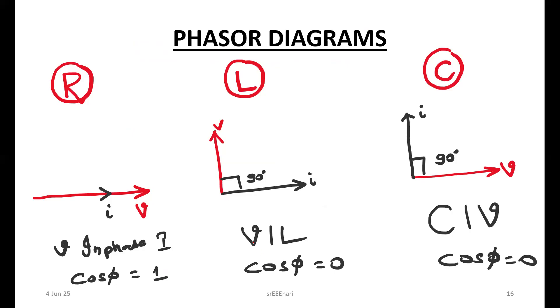Whereas in L, voltage leads current. VIL now, voltage leads current. Whereas this one, current leads voltage in pure capacitor.